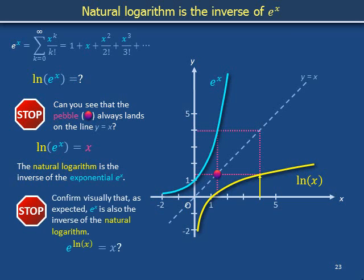Please walk yourself through a similar set of pink dashed lines to confirm visually that e to the x undoes the natural logarithm, meaning that e to the natural log on x equals x.